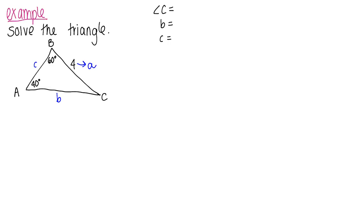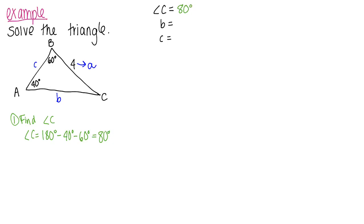It's often easiest to start with finding the missing angle when you already have two angles. Finding angle C is not a big deal: angle C equals 180 degrees minus the other two angles, so 180 minus 40 degrees minus 60 degrees, which leaves 80 degrees. We didn't even have to use law of sines for that one.